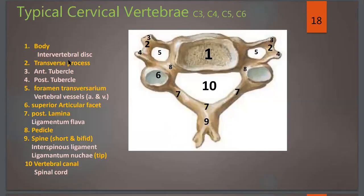To name the structures of a typical cervical vertebra: number 1 is the body, between two bodies is the intervertebral disc, the transverse process has a hole which is the foramen transversarium giving passage to vertebral vessels, with an anterior tubercle and posterior tubercle. Number 2 is the costotransverse bar. Number 6 is the superior articular facet. Number 7 is the lamina — right and left laminae. Number 8 is the pedicle. The spine is bifid and gives attachment to interspinous and supraspinous ligaments, and the tip gives attachment to ligamentum nuchae. Number 10 is the vertebral canal giving passage to the spinal cord.